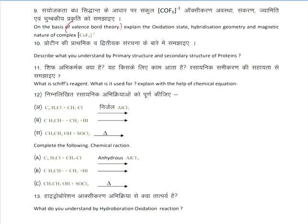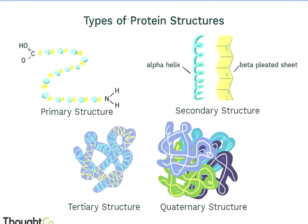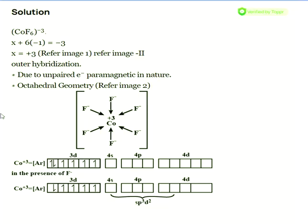For [CoF₆]³⁻, the central atom is Co. Take the oxidation state of Co as X. There are six F atoms, each with oxidation state minus one, and the overall charge is minus three. So X + 6(−1) = −3, which gives X = +3. The oxidation state of Co is plus three.